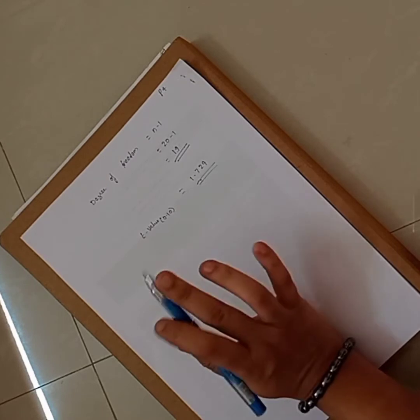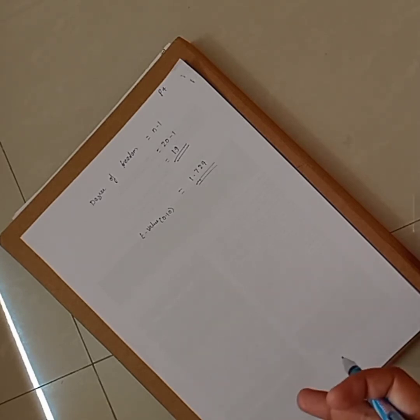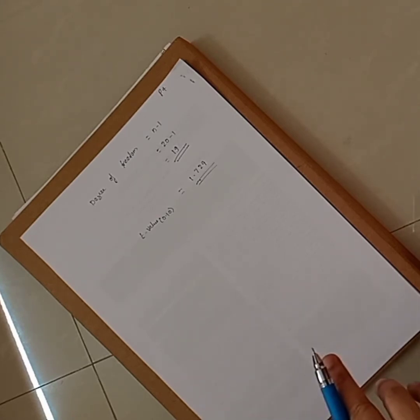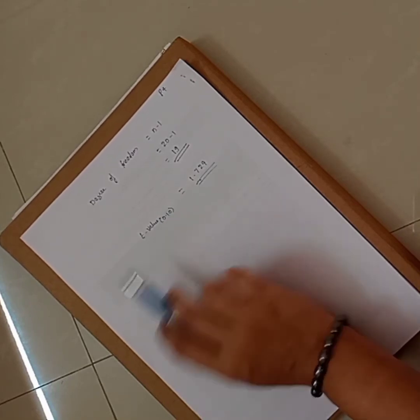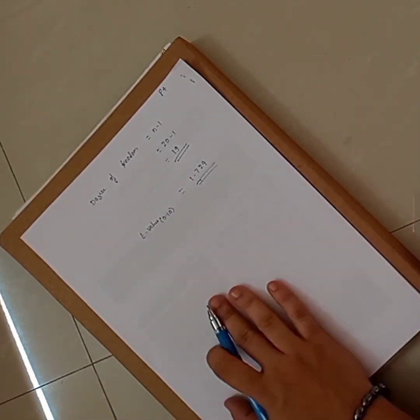If only the confidence level is given in a question, you need to find the alpha value. If 90% is the confidence level then alpha is 0.10. If 95% is the confidence level then alpha is 0.05. Then use the T-value for that alpha under the relevant degree of freedom.